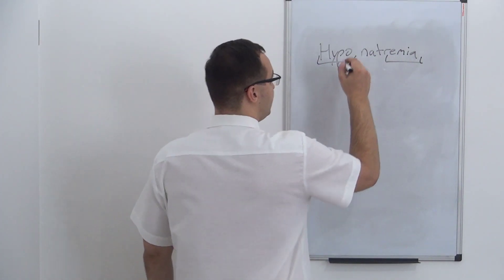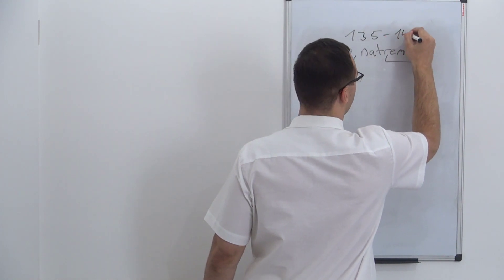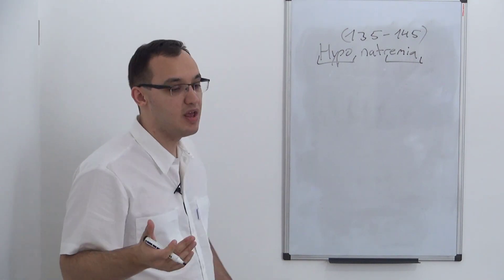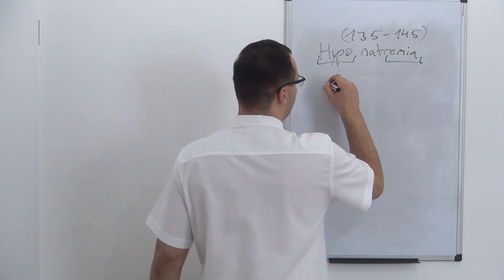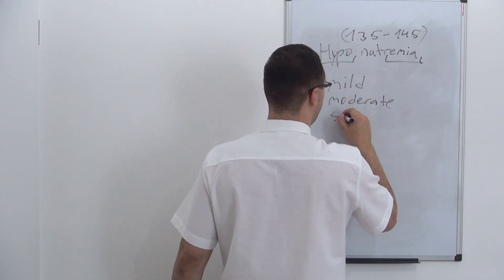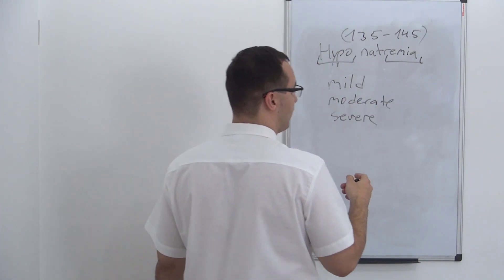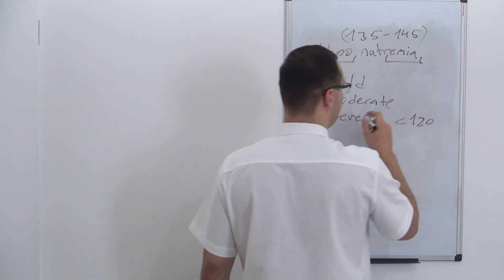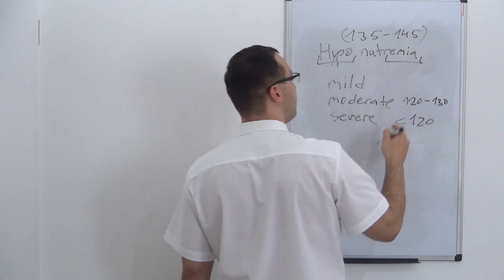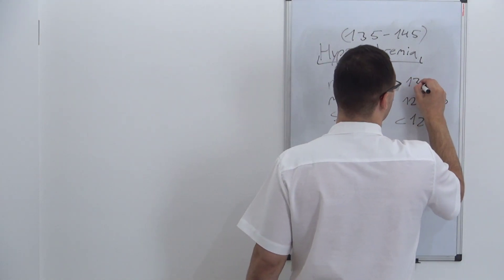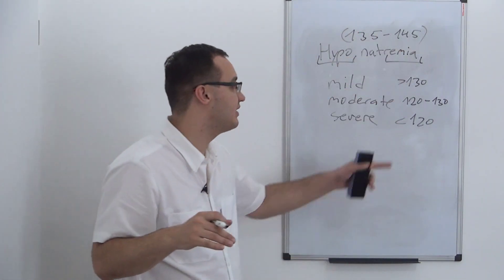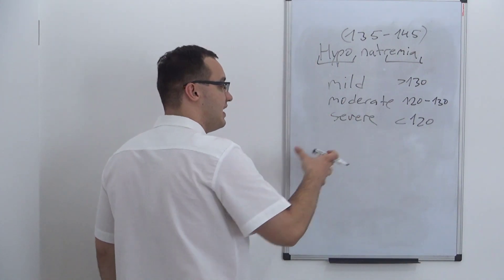Usually the sodium level is between 135 and 145, depending on your laboratory. When you have less than 135, that's hyponatremia. We can divide it into mild, moderate, or severe. Severe is when we have less than 120, moderate is between 120 and 130, and mild is when it's more than 130 — for example, 130 to 135.